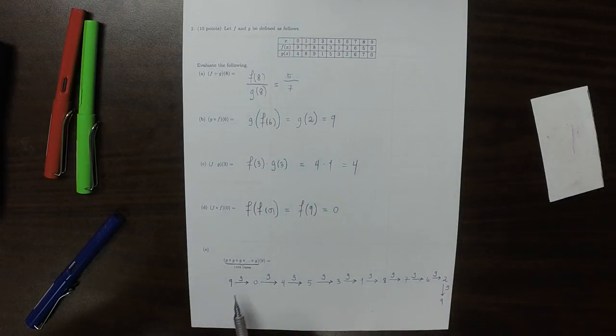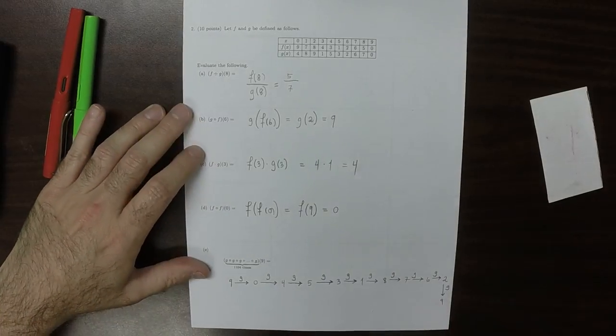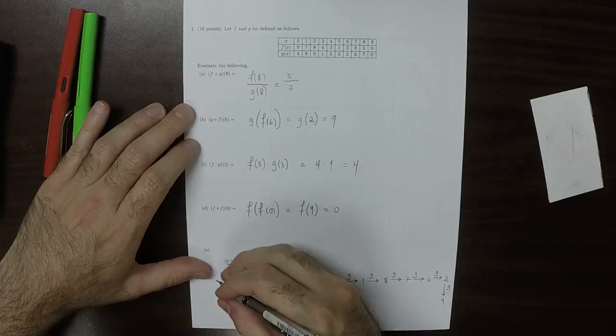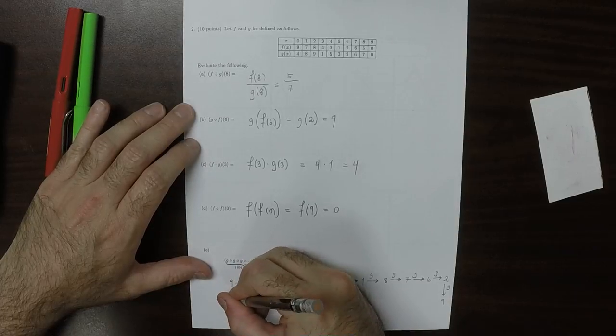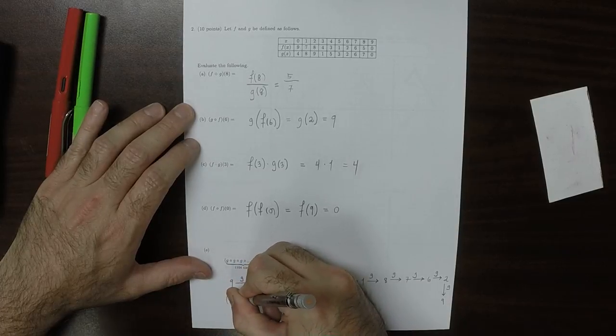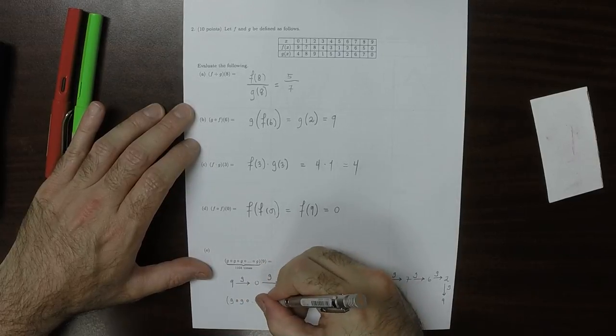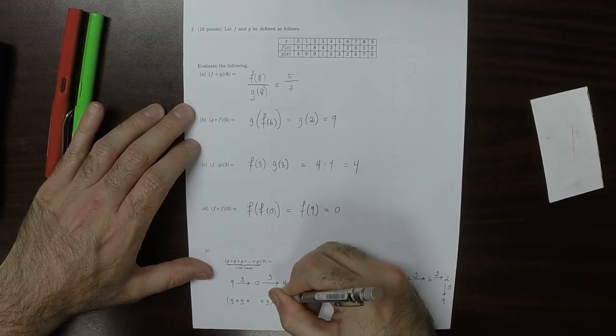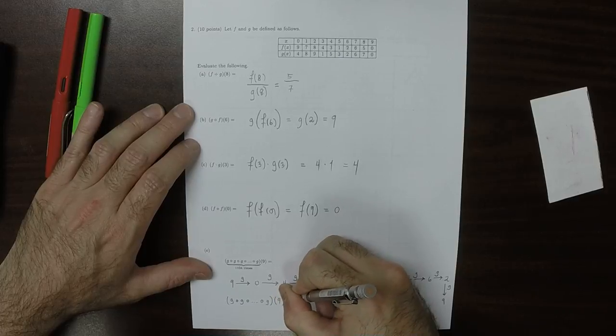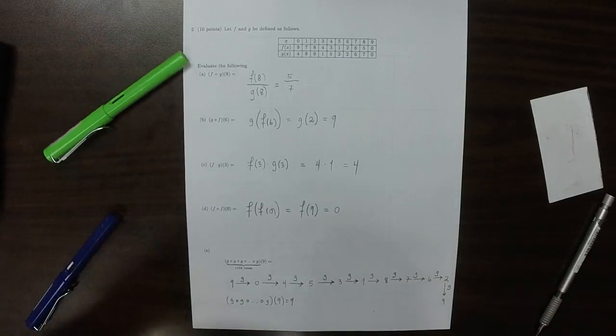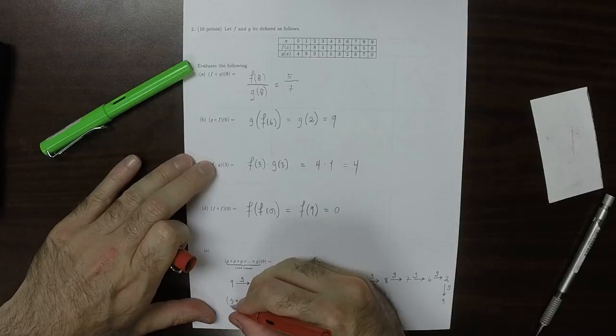And then we plug that 2 into G, and then we get a 9. So that means that after doing G 1, 2, 3, 4, 5, 6, 7, 8, 9, 10 times is the same as doing nothing. So that means that G circ G circ dot dot dot circ G of 9 is 9, where this is 10 times.